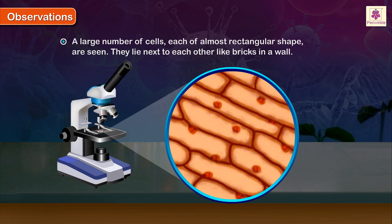A large number of cells, each of almost rectangular shape, are seen. They lie next to each other like bricks in a wall.